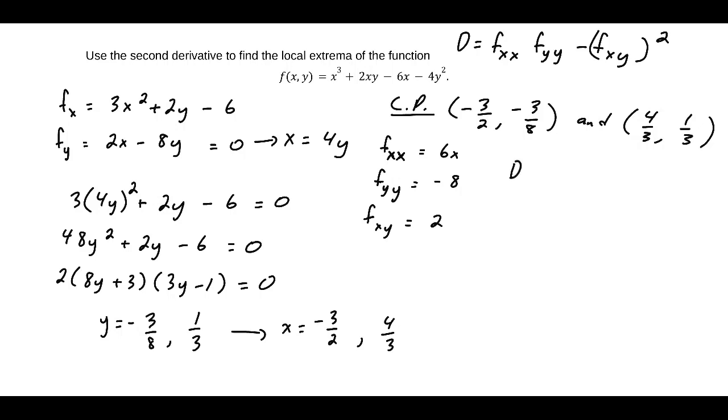So d of the point negative 3 over 2 comma negative 3 over 8, using all these values, is greater than 0, and fxx at that same point negative 3 over 2 comma negative 3 over 8 is less than 0. The d test, or the second derivative test, tells us that this is a local maximum at the point negative 3 over 2 comma negative 3 over 8.